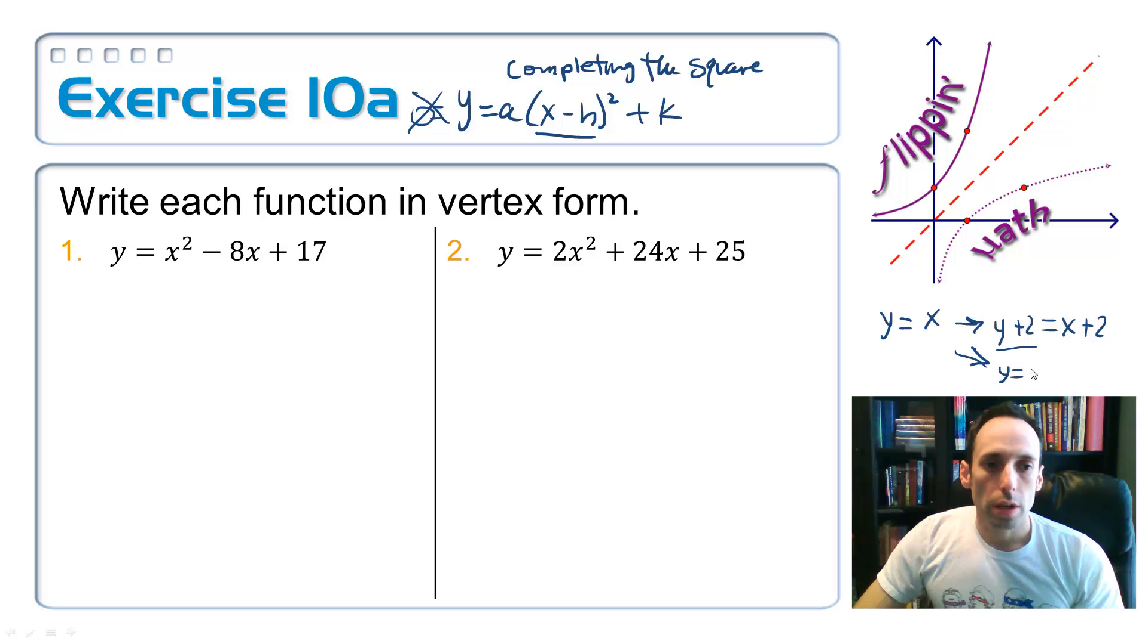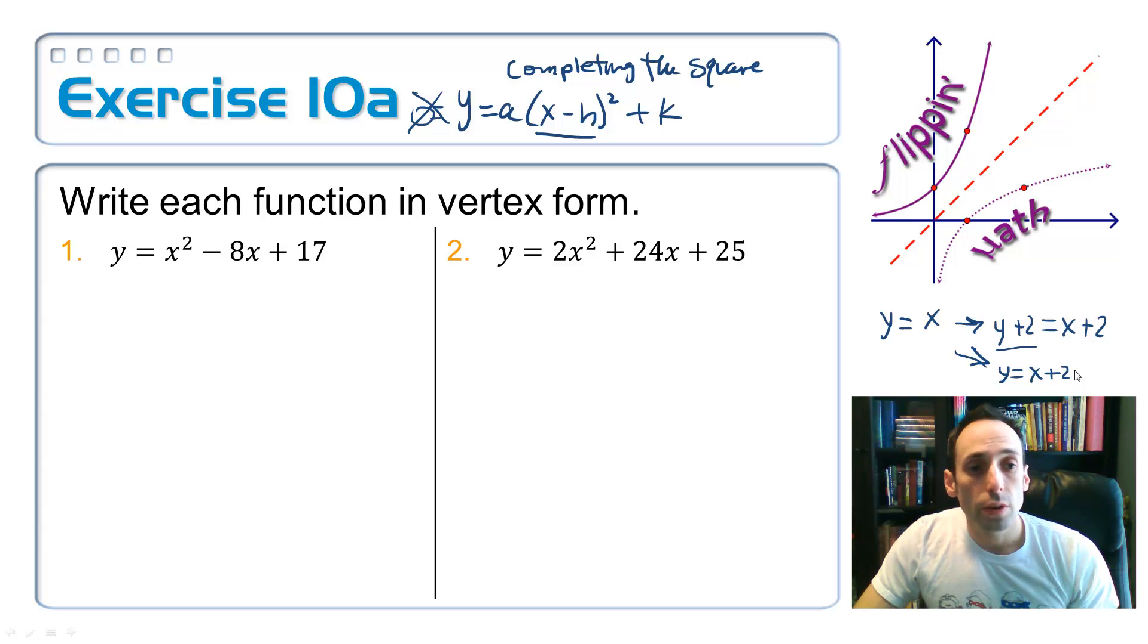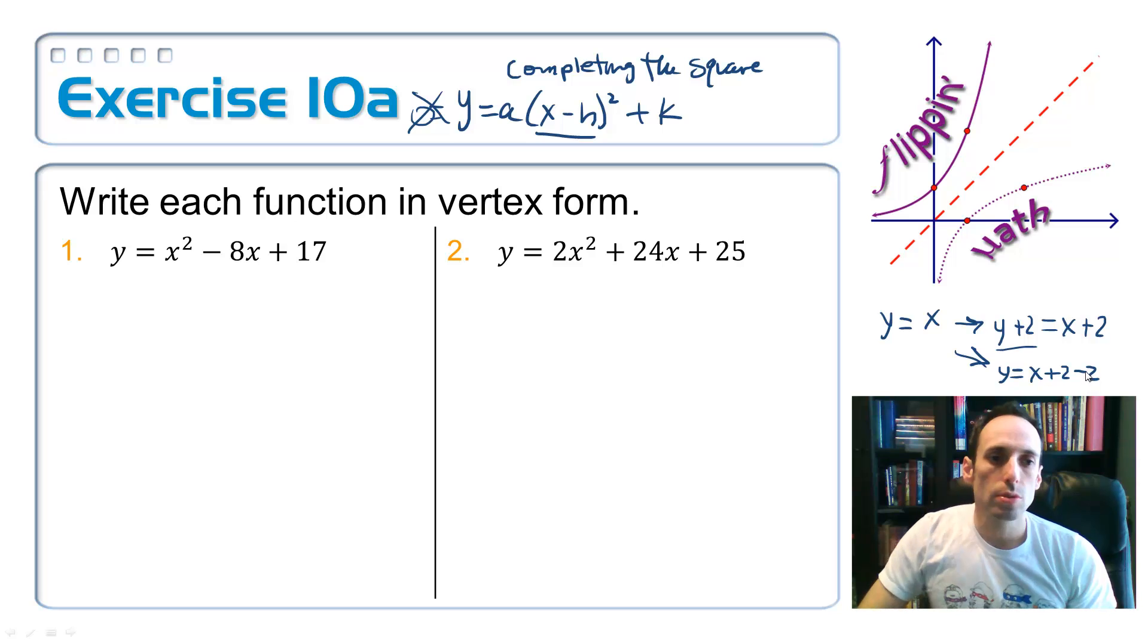All right, now I'm going to keep y equals and then I have the x plus 2, assuming this is some number that's completing the square. And then to get rid of it, I'm going to subtract it right afterwards. So now those twos cancel out and we're back to the original equation.